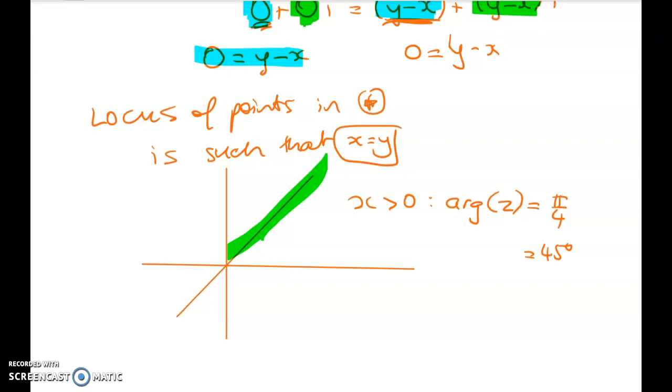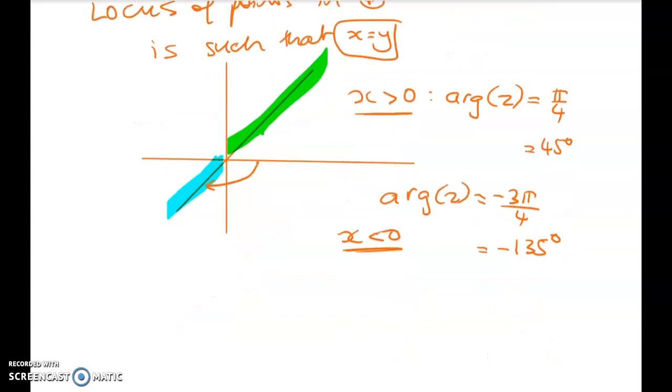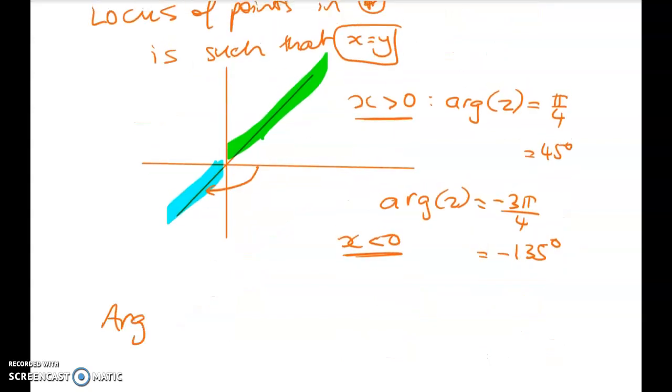But if x is negative, then I'm down here. And I get, what do I get? Arg z is equal to negative 3π/4, which is negative 135 degrees. So that's for x negative. So they are the two values for arg z. So that's the range of values. So arg z is π/4 or negative 3π/4.